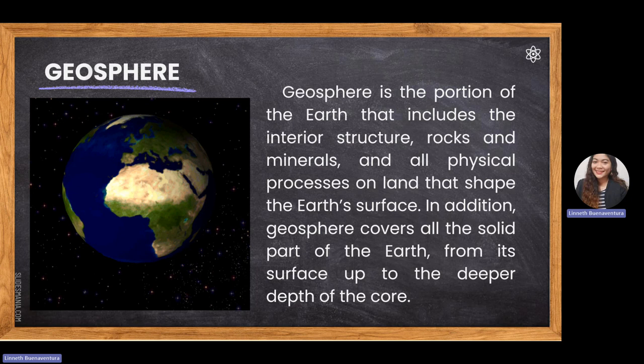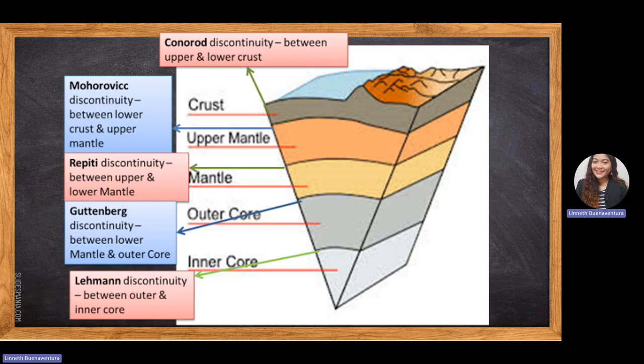The geosphere is the portion that includes the interior structures of rocks and minerals, and all physical processes on the land that shape Earth's surface. It covers all solid parts of the Earth. The detailed layers include the crust — which contains the lithosphere, divided into oceanic and continental crust — the mantle, divided into upper and lower mantle, and the core, consisting of outer and inner core.